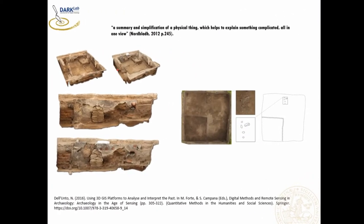Today I would like to divide the presentation in two small parts. The first one is about 3D models — what are these entities and how they should be considered in relation to what we search or document. The second is about some case studies displaying our results. A definition I like is that a 3D model is a summary or simplification of a physical thing. We have very different typologies of 3D models, and the idea that those can substitute drawings is not true — every typology of data has its own affordance, and all of those can help us document and highlight specific aspects.